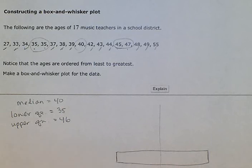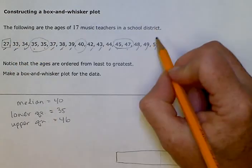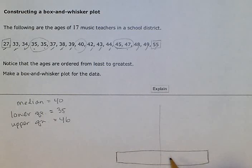And then we use whiskers to show the minimum and the maximum values. So our smallest number was 27. That's this one over here. And our greatest number was 55 over here. So then we need to go down to 27.